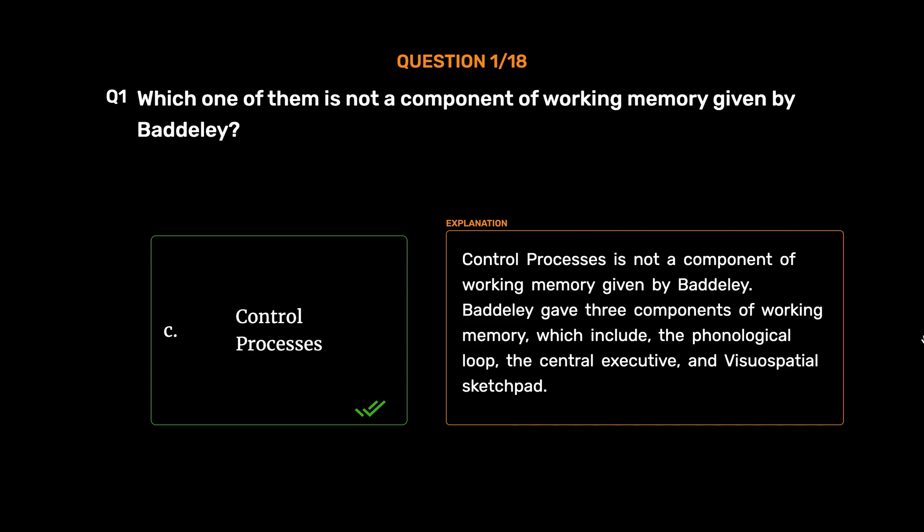Baddeley gave three components of working memory, which include the Phonological Loop, the Central Executive, and Visual Spatial Sketchpad.